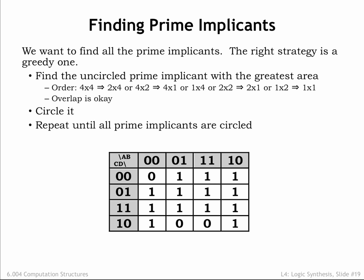Let's try another example. Remember that we're looking for the largest possible prime implicants. A good way to proceed is to find some uncircled one and then identify the largest implicant we can find that incorporates that cell.